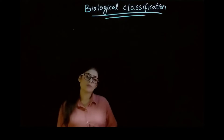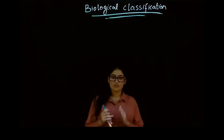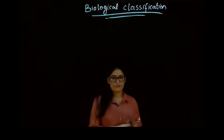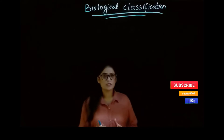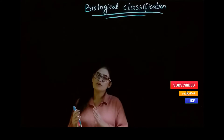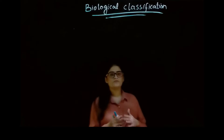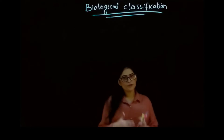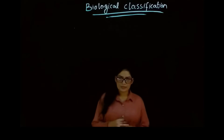So biological classification is the classification of living organisms. Because there is so much diversity present on the earth, we cannot study all organisms according to their properties and characteristics randomly. We have to classify those organisms into different groups and categories according to their properties as well as characteristics. There are so many scientists who attempted work in biological classification, and we will discuss all of them today.